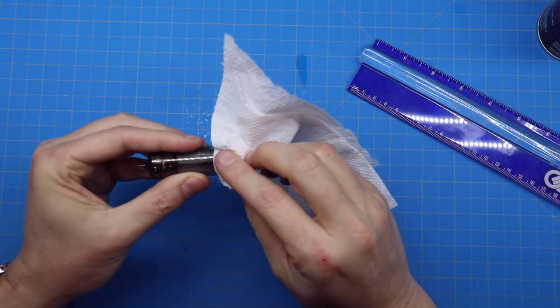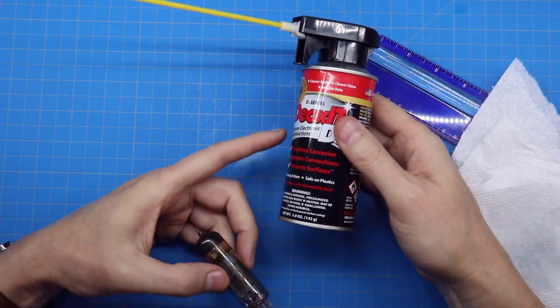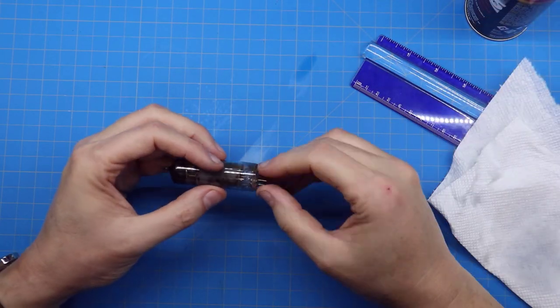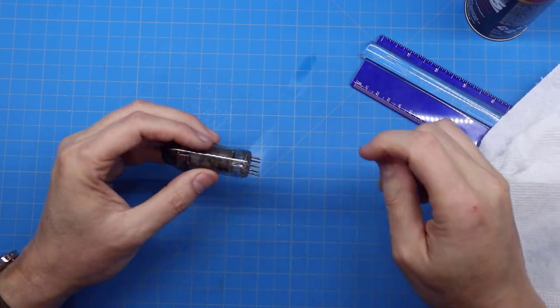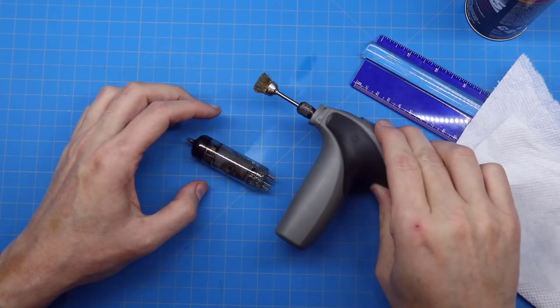You can get rid of any excess here that might have gotten on the tube glass or whatnot. But this has corrosion inhibitors on it. So the coating it puts on there will stay on there for years and keep your pins from corroding again.